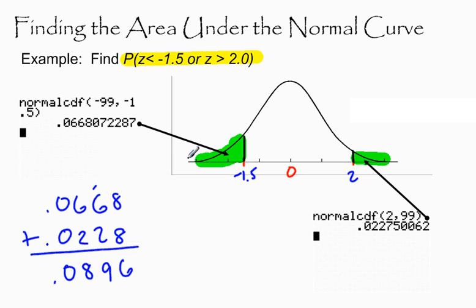So the probability, if I come up here, the probability that Z is less than negative 1.5 or greater than 2.0 is 0.0896. And you could also write that as a percent if you wanted, which would be 8.96%.